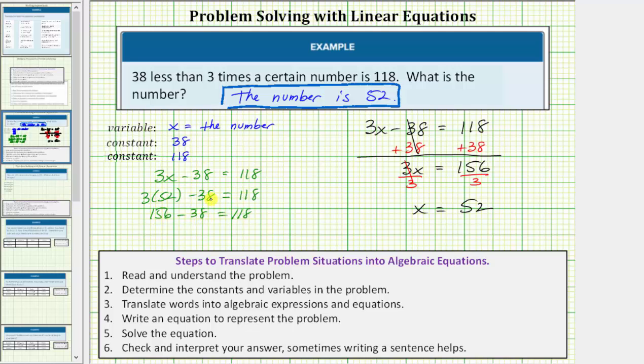Three times 52 is equal to 156. 156 minus 38 is equal to 118. 118 equals 118 is true, verifying our solution is correct.